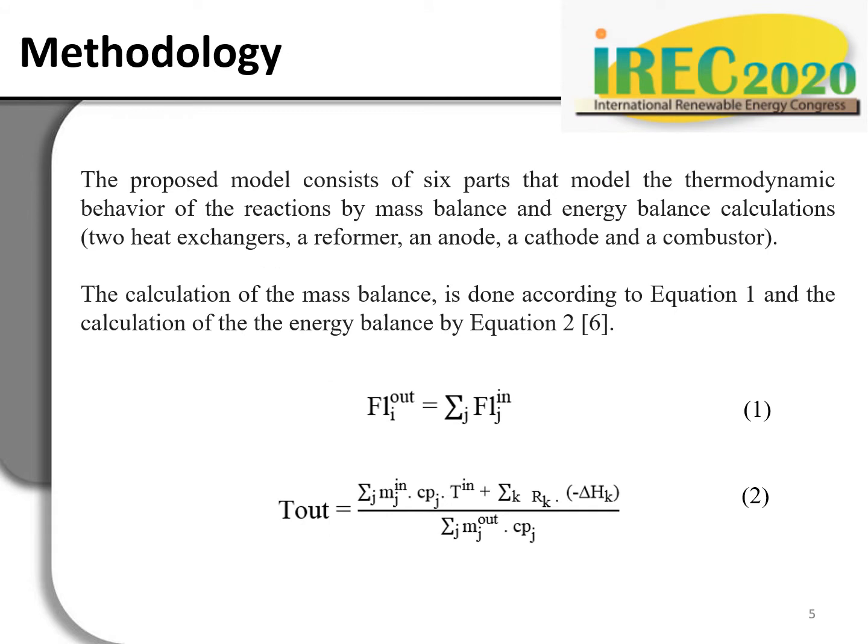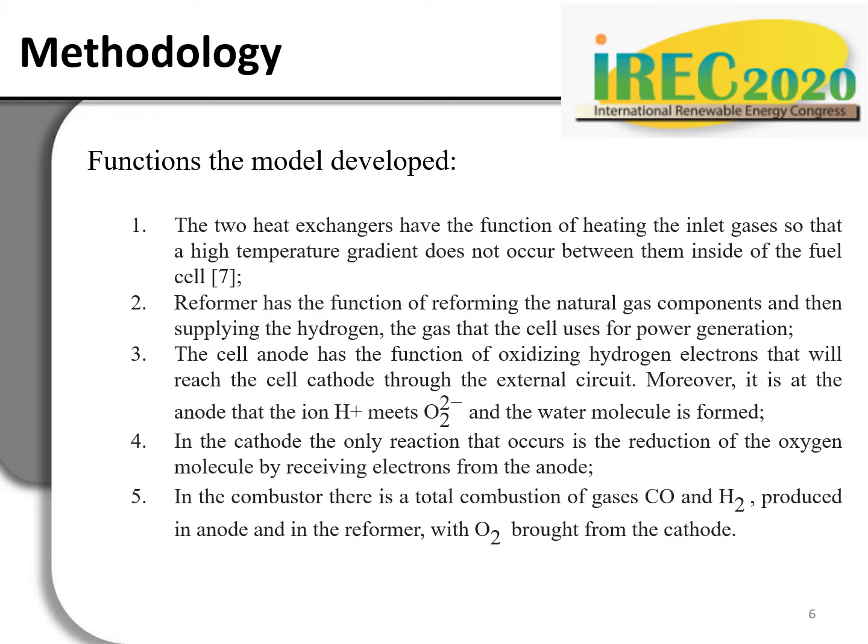The proposed model consists of six parts that model the thermodynamic behavior of reactions by mass balance and energy balance calculations, composed of two heat exchangers, a reformer, an anode, a cathode, and a combustor. The calculation of the mass balance is done according to equation 1, and the energy balance is calculated by equation 2. Now, the functions of the model components are detailed.